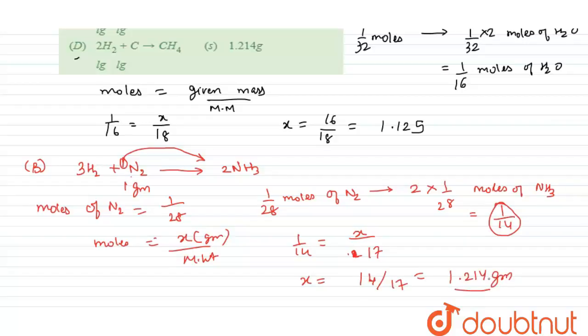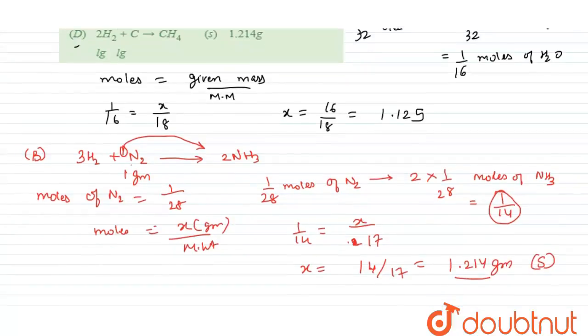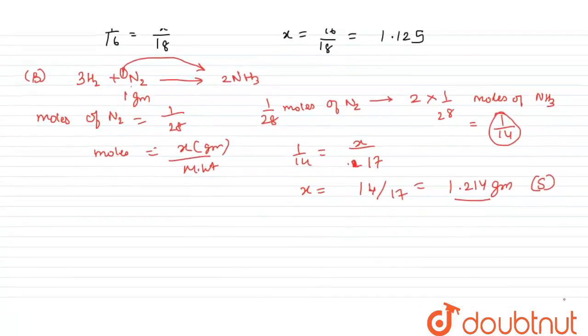And that is S. Now I will solve option C. Similar method we will use for option C. So H2 plus Cl2 gives 2HCl.